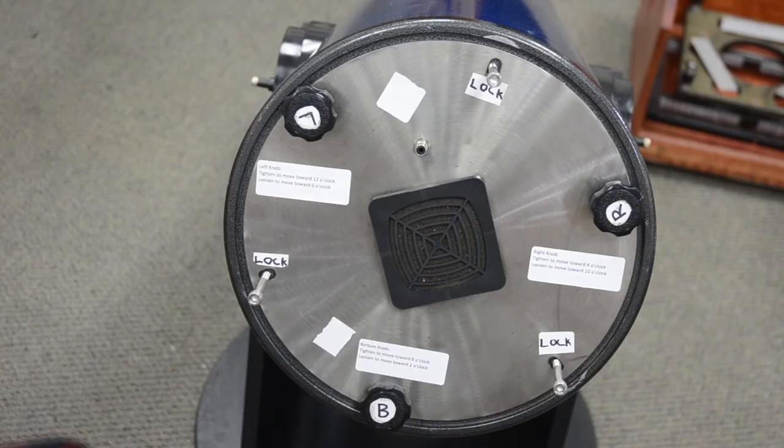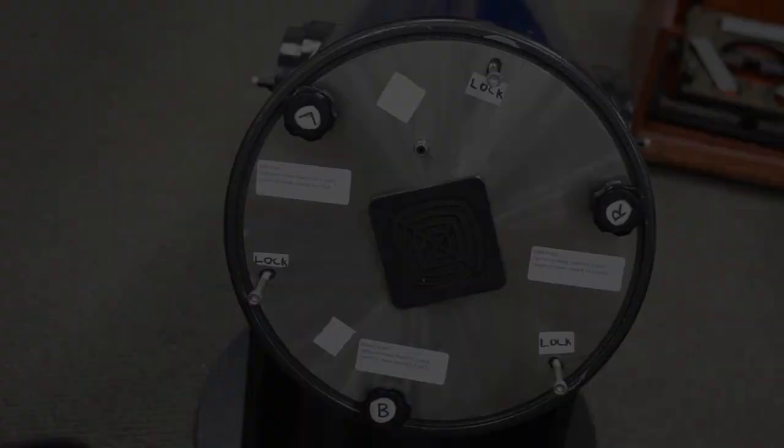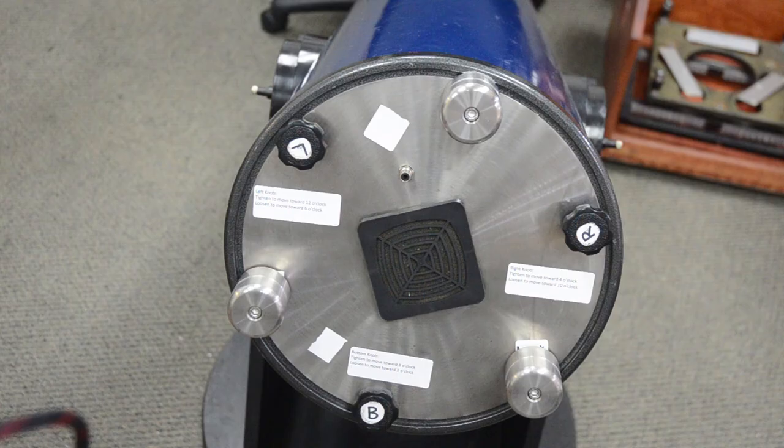You are better off without them. If you need counterweights for your scope, Farpoint makes nice weights that attach on your mirror cell using your locking screws. Again, keep the locking screws loose. The locking screws holding the counterweights need not lock the mirror in place if you have strong collimation springs. This is the best use of your mirror cell locking screws.